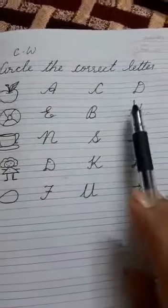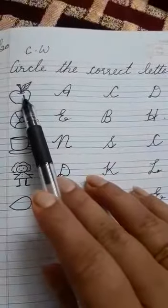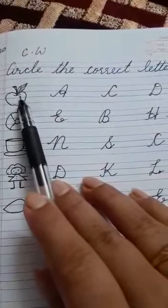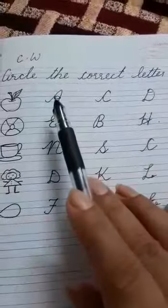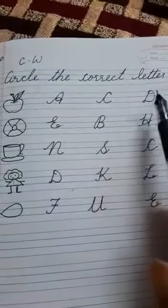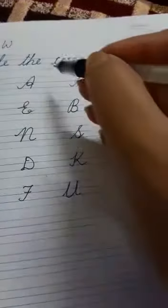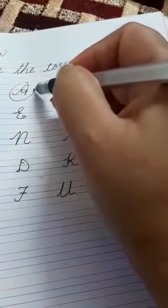Now these are the letters. Now first is your apple. What letter will you circle? A for apple, C for apple, or D for apple? A for apple. So you will circle A for apple.